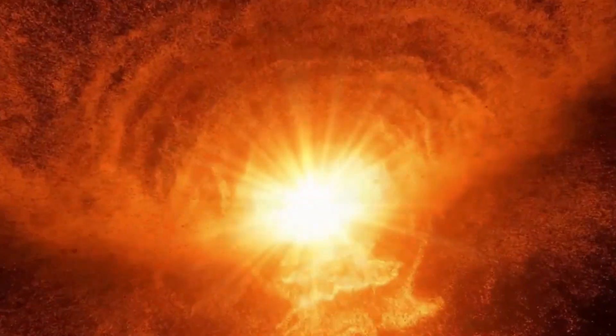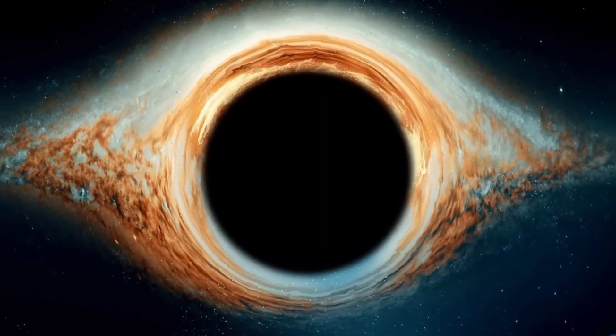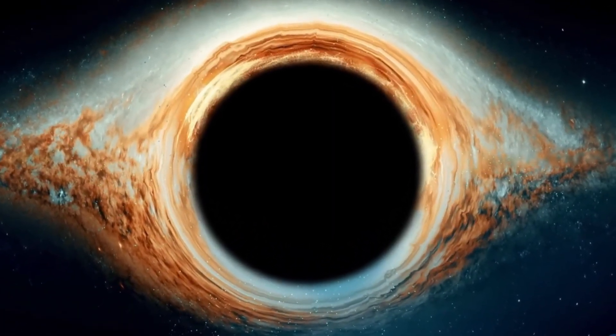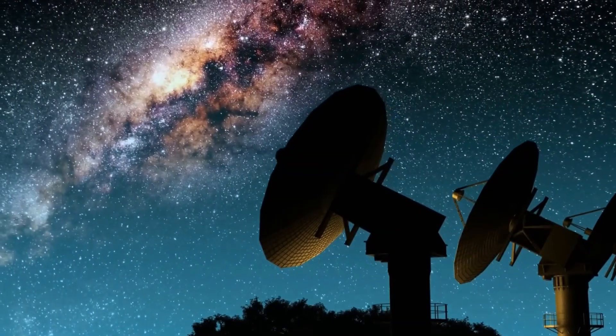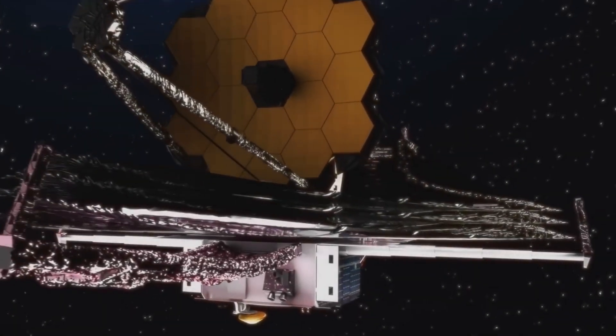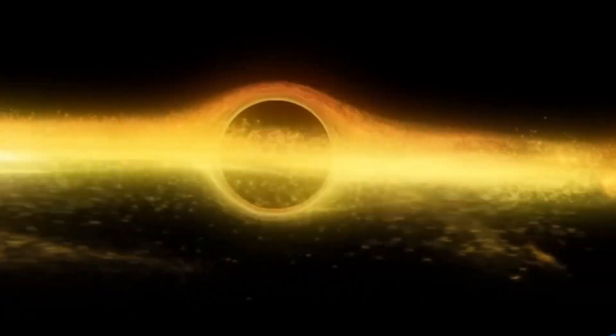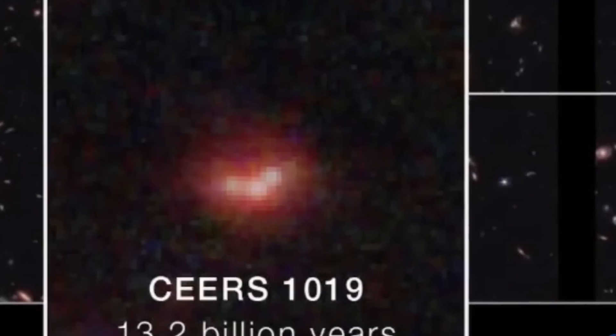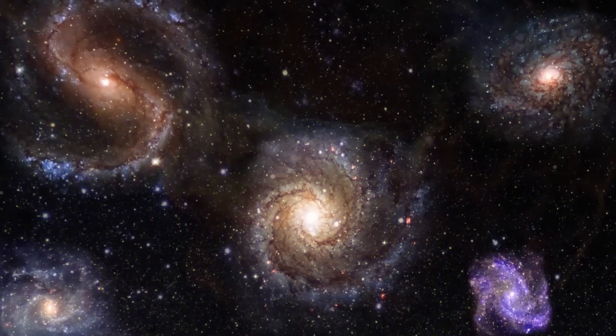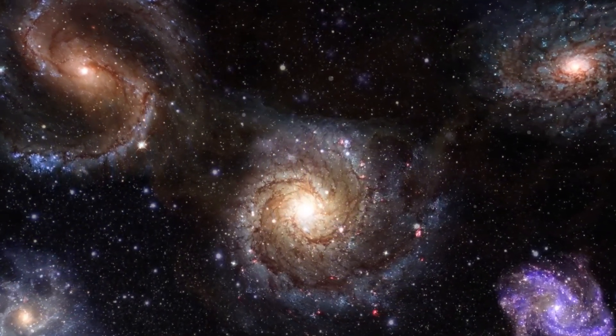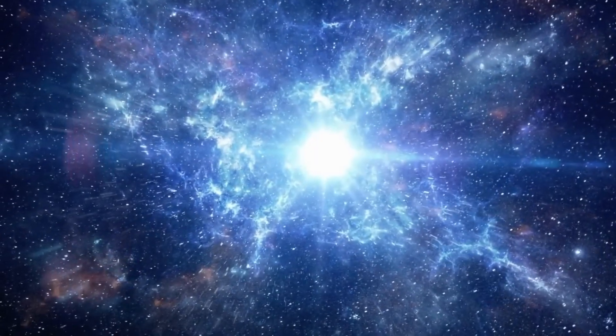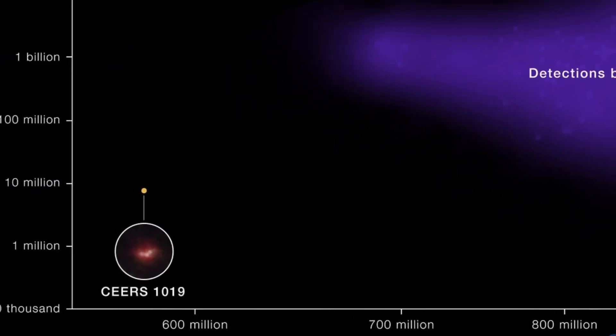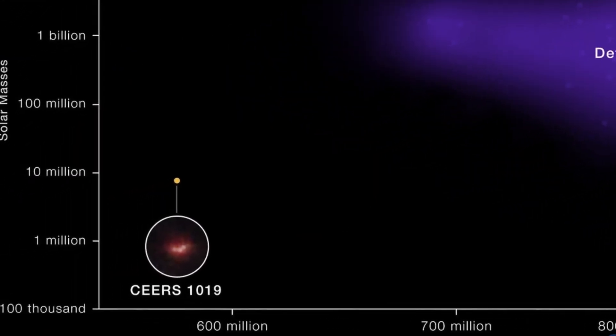Take GN-Z11, for example, a galaxy that existed when the universe was only about 400 million years old. At its core lies a black hole approximately 6 million times the mass of our Sun, a discovery that has left scientists rethinking how such massive objects could have formed so rapidly after the universe's birth. The existence of this black hole suggests that the seeds of supermassive black holes must have emerged and grown at an extraordinary pace, challenging and reshaping previous models of black hole formation in cosmic evolution.